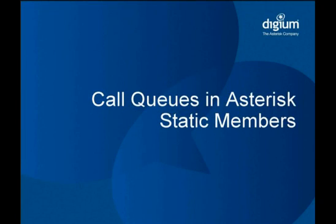In the last module, we learned about the basics of how call queues and Asterisk are configured, and we set up an example queue called 'support'. But we didn't assign any members to the queue, so it really wasn't a complete example.